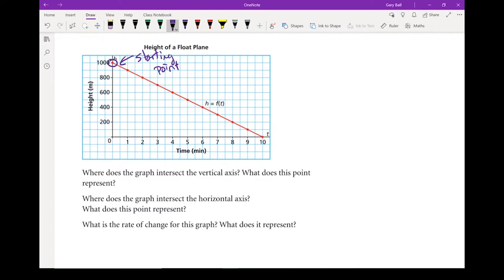Where does the graph intersect the horizontal axis? We're right over here at t equals ten minutes. This is our horizontal intercept, also known as the x-intercept. So I could label these as an x-intercept and a y-intercept.